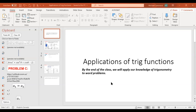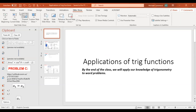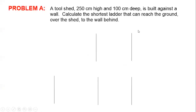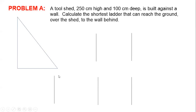So let's get started. We're looking at applications of trig functions. By the end of class, we're going to be able to apply our knowledge of trig derivatives to word problems. Let me start with this one. A tool shed is 250 centimeters high and 100 centimeters deep, and it's being built against a wall. We're going to try to calculate the shortest ladder that can reach from the ground, over the shed, to the wall behind. You've done a lot of questions with ladders against walls before, but this one is quite different.